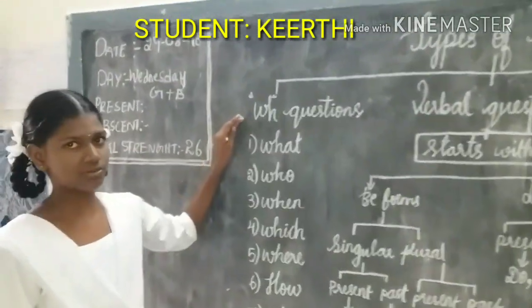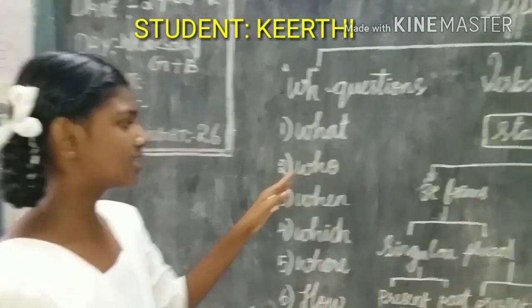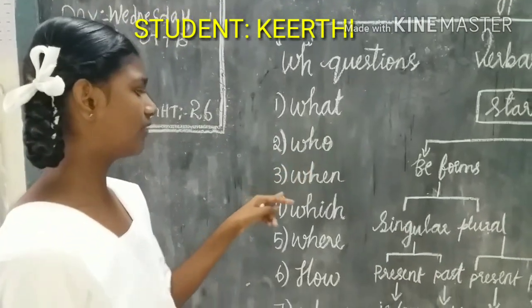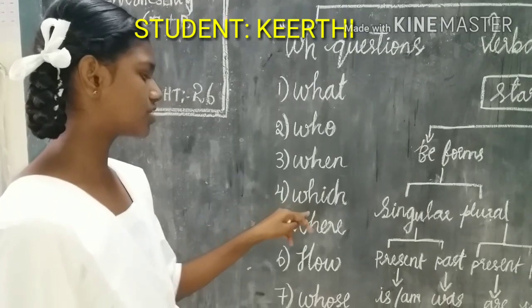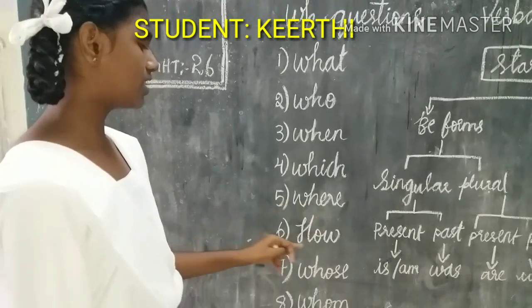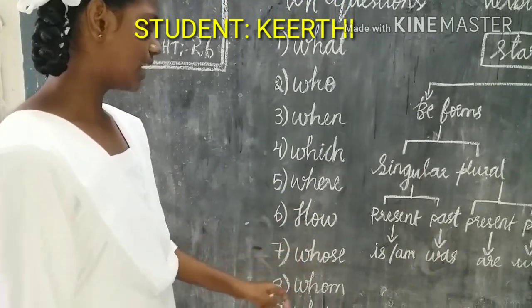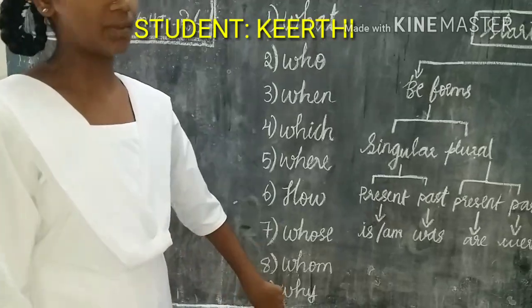WH questions include the following words: what, who, when, which, where, how, whose, whom, and why. These are the nine WH question words used to frame questions.